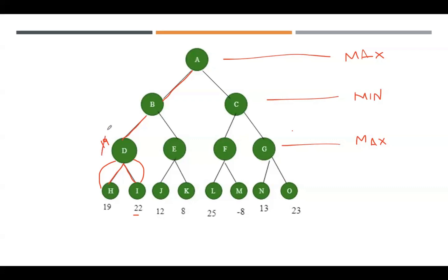22 will be placed here, and after that this 22 will be sent back to its parent node, which is B. This left part is over now, so now move towards the right part of B.